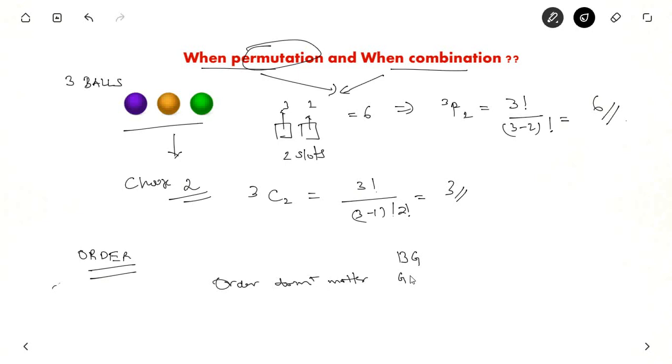But there are only 3 ways. Whereas in permutation, whether you put blue in the first slot or green in the first slot, it matters. So arrangement matters. Order matters in permutation.